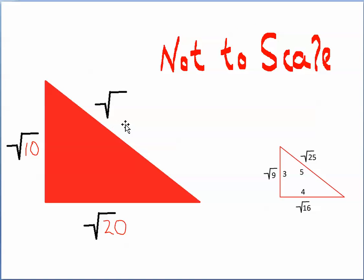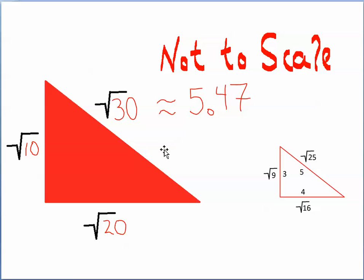Now let's look at a few problems. You know the length of one side is the square root of 10, and the other side is the square root of 20. What's the length of the hypotenuse? The answer is the square root of 30 — that's the perfect answer. However, it's an irrational number, so correct to two decimal places the square root of 30 is approximately 5.47.